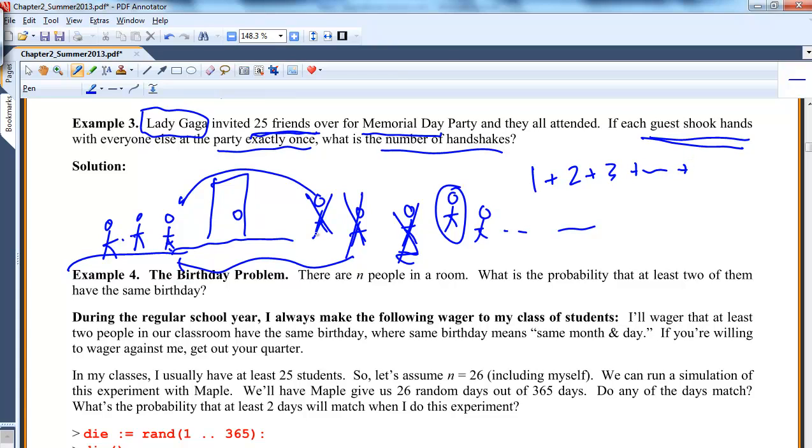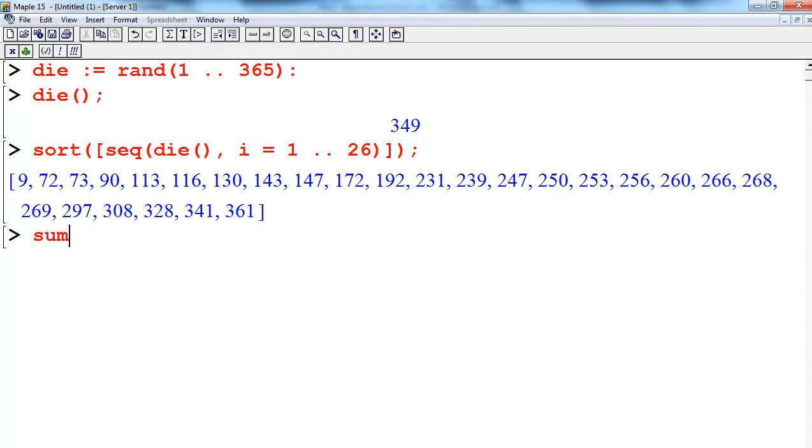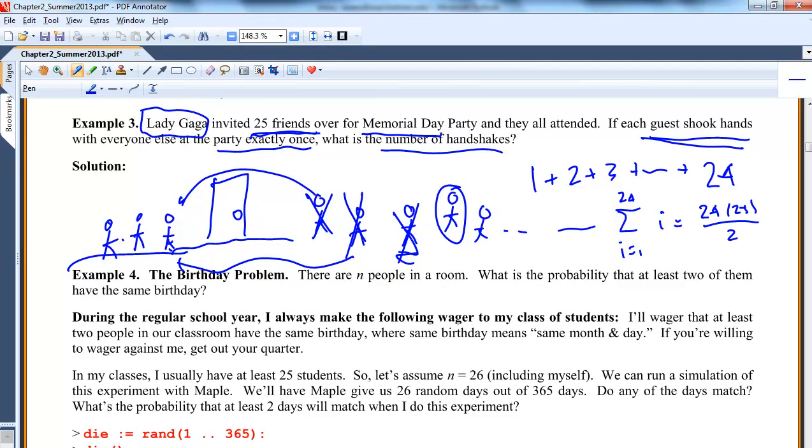So we have 1 plus 2 plus 3 plus all the way up to 24. The sum i equals 1 to 24. Isn't this just 24 times 25 over 2? There's a nice formula for this. So sum i equals 1 to 24 equals 300. So actually there's 300 different handshakes that will take place.